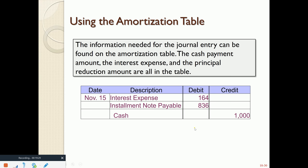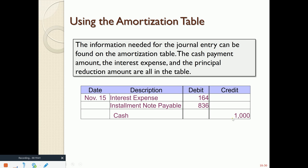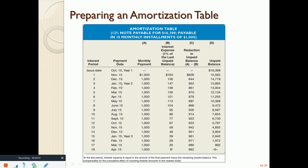Now let's look at some journal entries. On November 15th, the $1,000 payment consists of $164 for interest and $836 to reduce the principal. We write a check, so we credit cash for the full $1,000. $164 is interest expense, and the other $836 is a debit to reduce the notes payable. The end of the year is December 31st.